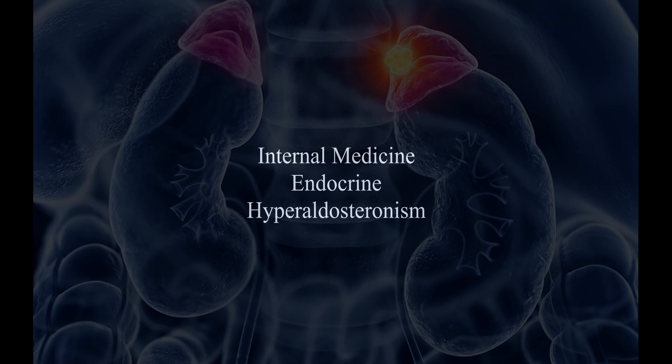To summarize everything: a patient has hypertension and hypokalemia — check the aldosterone-renin ratio. If it's normal, evaluate for other causes. If it's elevated, proceed with an adrenal suppression test.